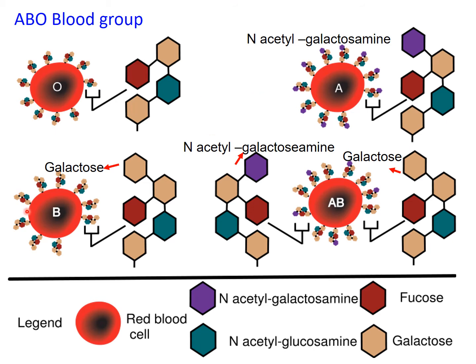For the ABO blood group, blood group O has a basal sugar structure attached to the surface of the cell that includes one fucose molecule, two galactose, and one N-acetylglucosamine. Blood group A has an additional N-acetylgalactosamine, blood group B has an additional galactose, and blood group AB has both. The enzymes that modify sugars on the surface of red blood cells to determine blood type are known as glycosidases.